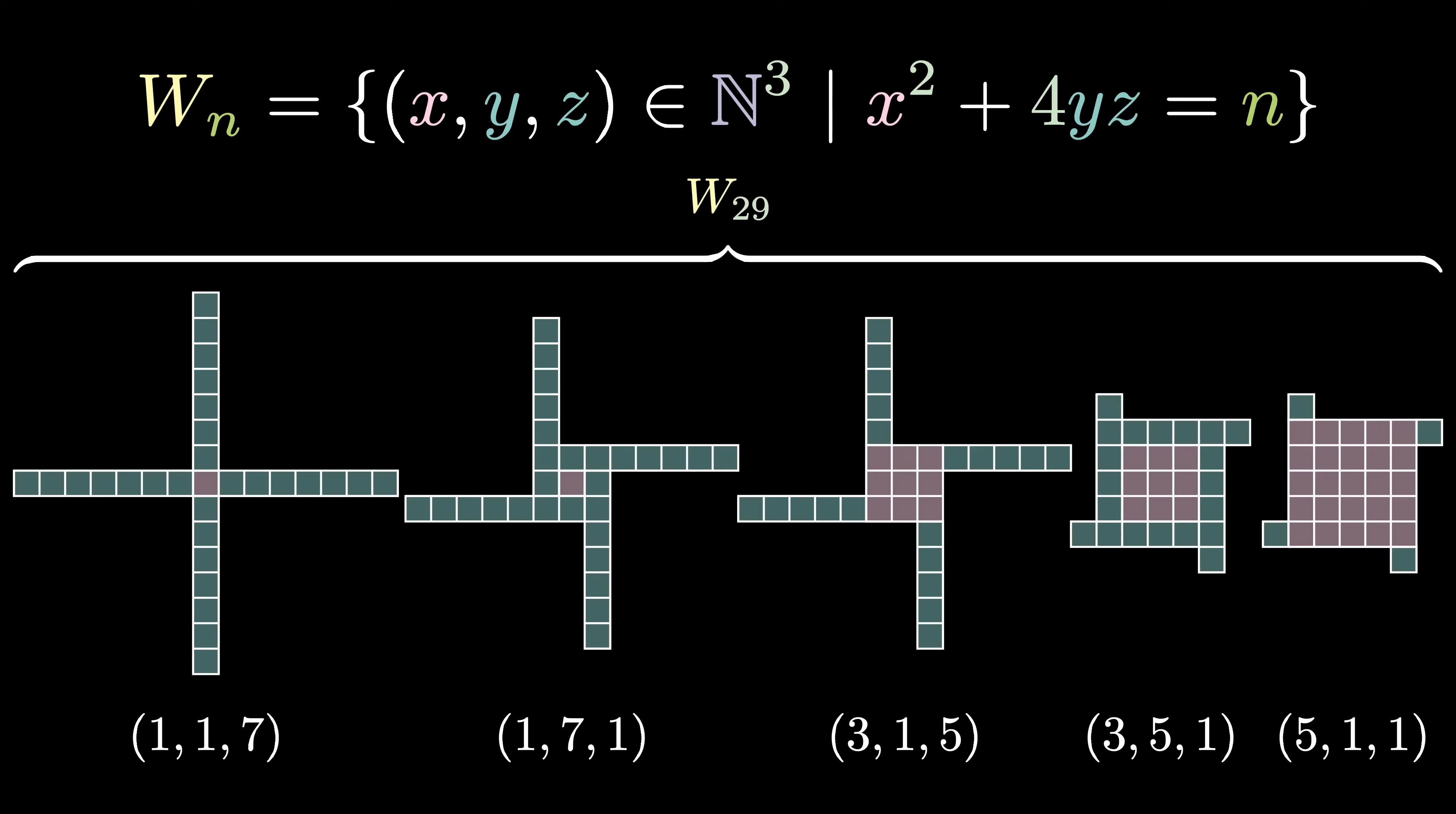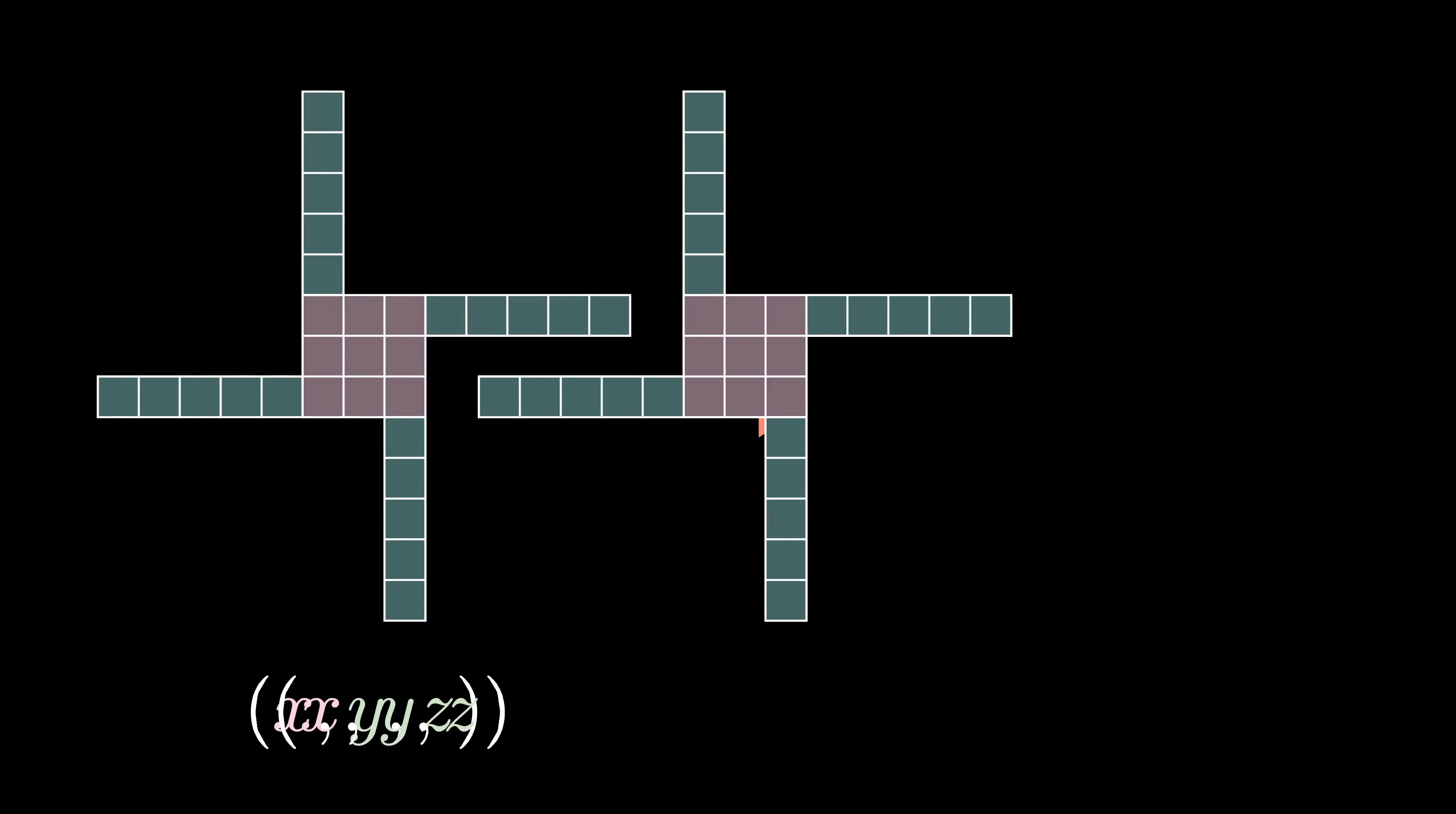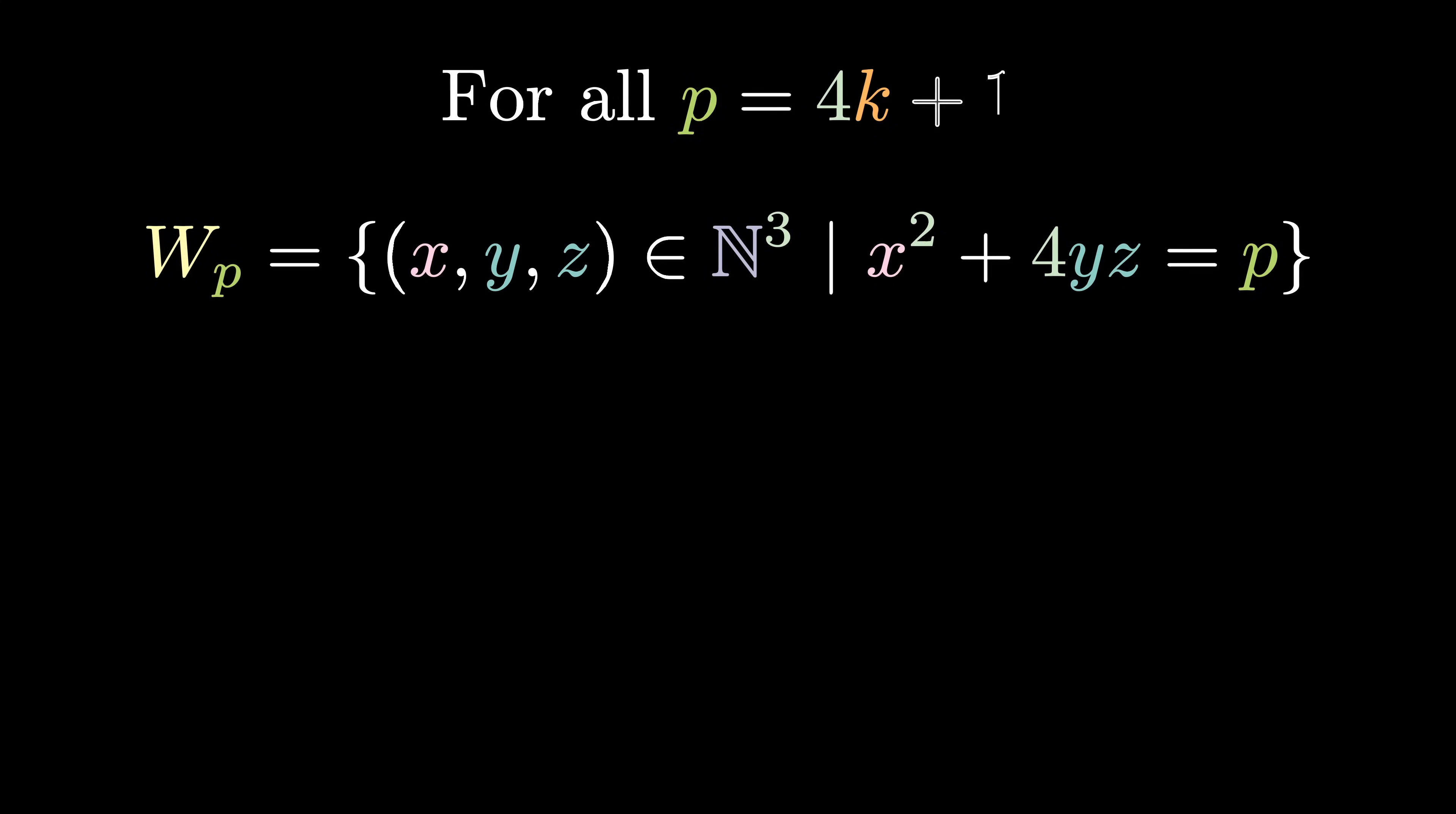For your number n and its corresponding set of windmills W_n, what's the simplest involution we can think of? This gives us a map from a windmill (x,y,z) to a windmill (x,z,y). As we saw before, two applications of this mapping results in (x,y,z), which is what we started with. Let's call this the flip map. So for example, (3,1,5) becomes (3,5,1) and vice versa.